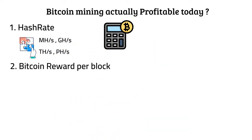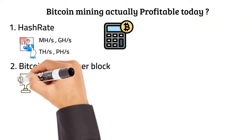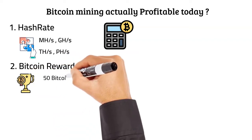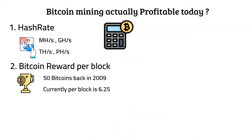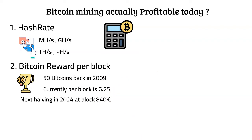Number 2: Bitcoin rewards per block. This refers to the number of bitcoins generated when a miner finds the solution. This number started at 50 bitcoins back in 2009 and halves every 210,000 blocks, approximately every 4 years. The current number of bitcoins awarded per block is 6.25. The last halving occurred in May 2020, and the next one will be in 2024 at block 840,000. This number also represents how hard it is to mine bitcoins at any given moment, according to the amount of mining power currently active in the system.